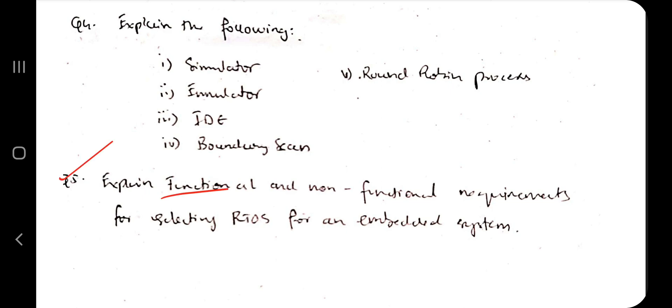The last question is functional and non-functional requirements, a super important question for selecting RTOS (real-time operating system) for an embedded system. What are the different functional and non-functional requirements is a super important question. You have to mention each key point inside the functional and non-functional. You have to mention that very well as well as give the explanation for each.